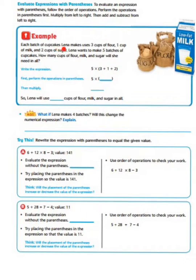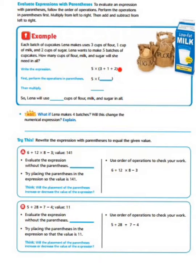Each batch of cupcakes Lena makes uses 3 cups of flour, 1 cup of milk, and 2 cups of sugar. Lena wants to make 5 batches of cupcakes. How many cups of flour, milk, and sugar will she need in all? We can write the expression as 5 times the quantity 3 plus 1 plus 2, because everything in each batch stays the same.